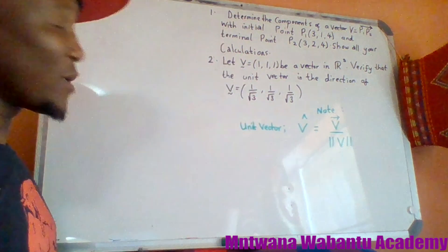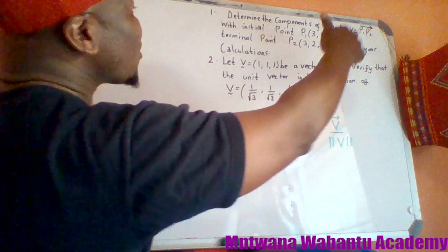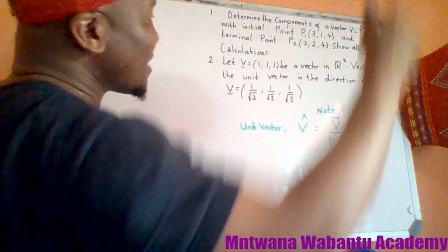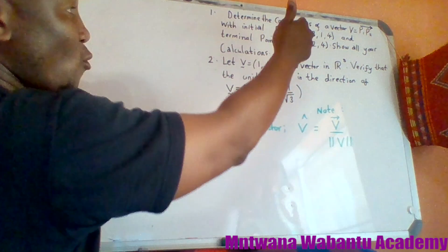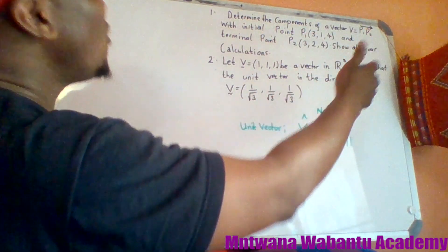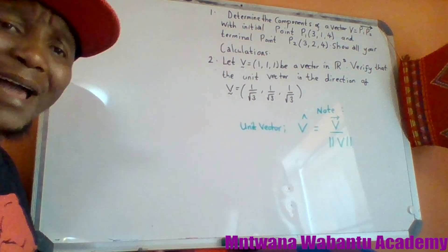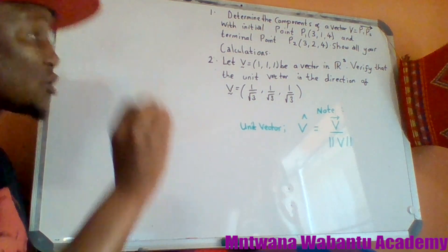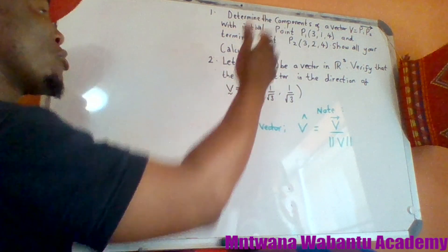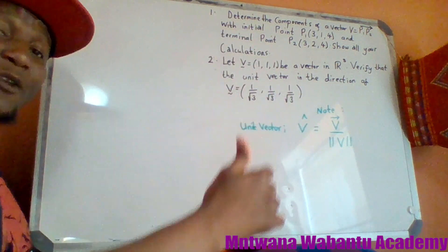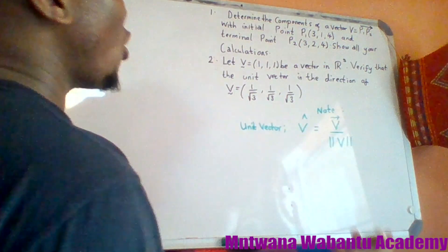We have a question: determine the components of a vector B equal to P1P2, with initial point P1(3,1,4) and terminal point P2(3,2,1). Initial means starting point, and terminal means the final or last point. Show all the calculations required to find P1P2.